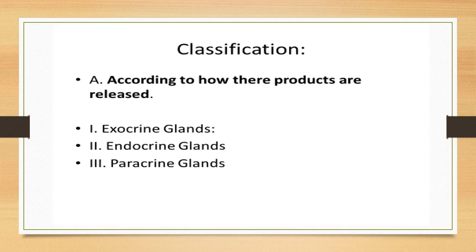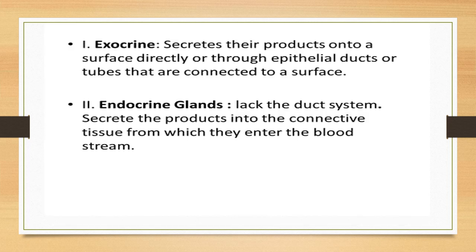Broadly, glands are classified according to the products they release into exocrine, endocrine, and paracrine glands. Exocrine glands secrete their products onto a surface directly or through epithelial ducts or tubes connected to a surface, so they must have a duct system. Endocrine glands do not have a duct system — they secrete their products into the connective tissue, from which the products enter the bloodstream and are carried to distant areas.